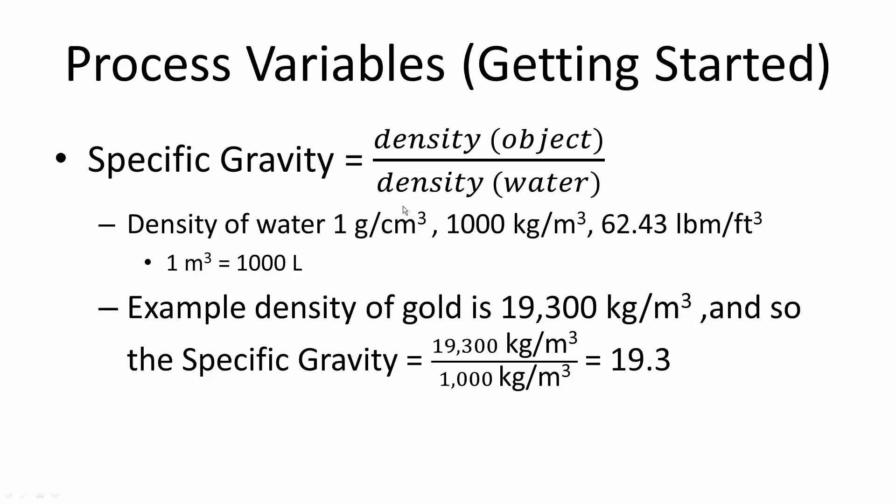The density of water is 1 gram per centimeter cubed, which is equivalent to 1,000 kilograms per meter cubed, which is equivalent to 62.43 pound mass per feet cubed. There are other conversions as well. For example, 1 meter cubed equals 1,000 liters.